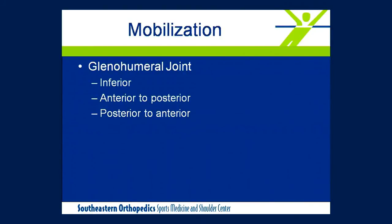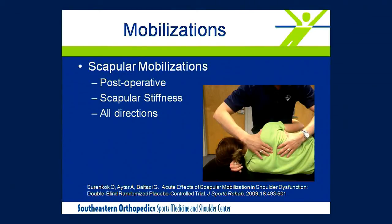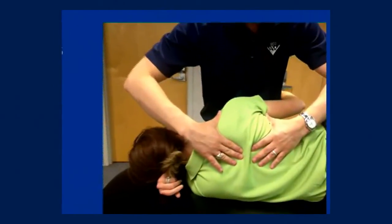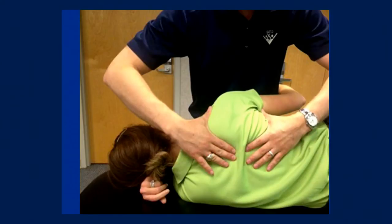Glenohumeral mobilizations can reduce pain and improve mobility, with posterior-to-anterior mobilizations helping posterior shoulder extensibility. For scapular mobilizations specifically, a sidelying position works well — the patient's thumb through the clinician's belt loop allows full arm relaxation and gives the clinician both hands free on the scapula. Research shows any direction of scapular mobilization helps improve scapular mobility. In this position, scapular distraction can also be performed effectively, particularly with the arm in a chicken wing position — a technique commonly used by massage therapists for periscapular pain.